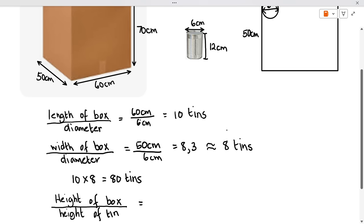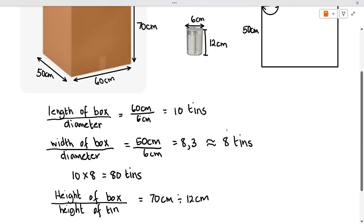And that would be 70 centimeters divided by 12 centimeters. So we're going to do 70 divided by 12, and that gives me 5.8. We can't round it up to 6 because if we round it up, the tins will go above the box and the box will not be able to close. So therefore, approximately 5 tins will fit height-wise.